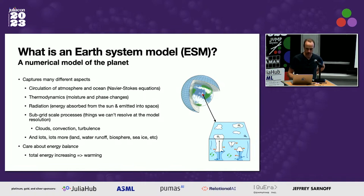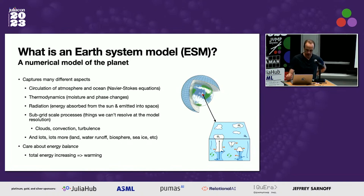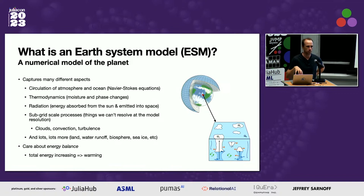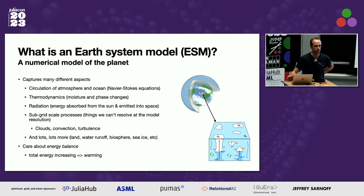There are two big fluids: the atmosphere and the ocean, which are moving around — stuff on a sphere. There's a bunch of thermodynamics in there, moisture and phase changes. There's radiation, stuff coming from the sun, different wavelengths of light that get absorbed by the Earth and also get re-emitted back to space. There's a huge amount of subgrid scale things — stuff we can't resolve at the model resolution — things like clouds, convection, and turbulence.